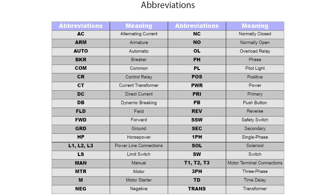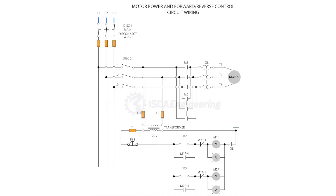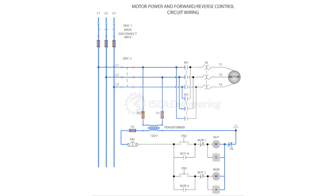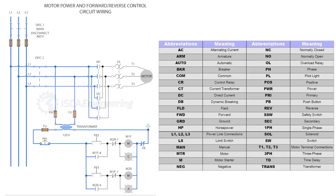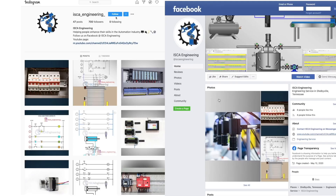So far, we have gone over a few symbols and some key abbreviations that will help in analyzing motor control drawings. Being able to read motor control drawings will help us understand the operation of a circuit and allow us to know the type of device and also the equipment location. This concludes the introduction to symbols and abbreviations. Getting familiar with symbols and abbreviations will make it easier to design, read, and understand electrical schematics. In the next video, we will cover how to read and construct ladder diagrams. Follow us on Instagram at ISCA underscore engineering for daily posts on electricity, controls, automation, and much more. Thanks for watching.